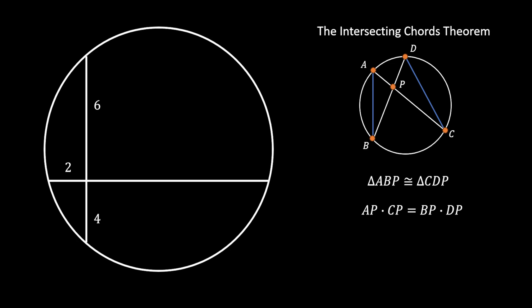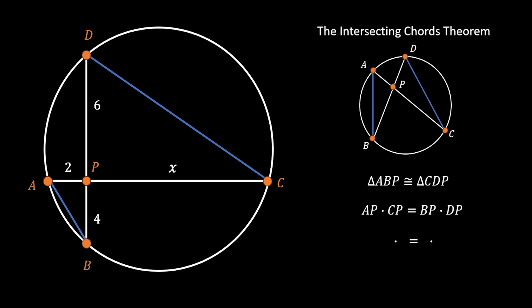Now we can use this theorem in our favor. We mark all intersection points as in the picture, and if we draw lines AB and CD, we again have those two triangles. We mark the segment CP as X. Substituting the values into our formula: AP equals 2, times CP equals X, must equal BP of 4 times DP of 6. From here, it is easy to solve that X is equal to 12, so this is our missing segment.